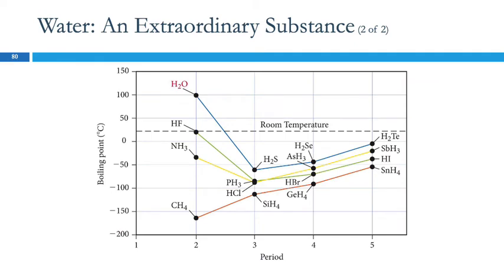Here we're looking at a graph of boiling point versus period — group four, group five, group six, and group seven elements. We see the general trend that boiling point increases as the molar mass of the substance increases. We can explain that through dispersion forces — dispersion forces are stronger in larger molecules because the electron cloud is more polarizable, it's flabby and can get out of shape, so those induced dipoles can happen better.